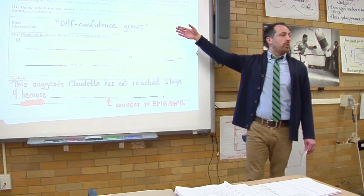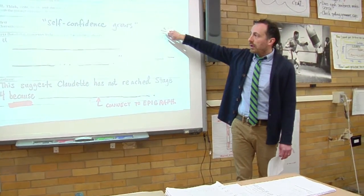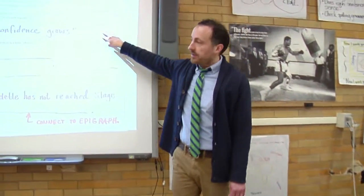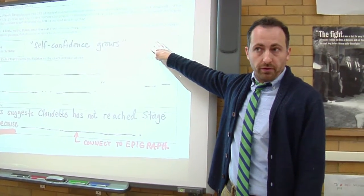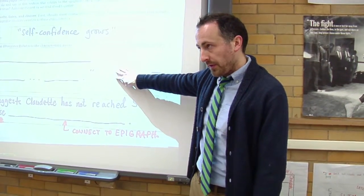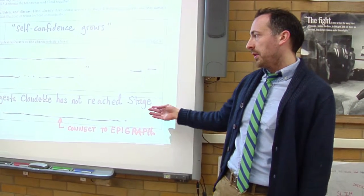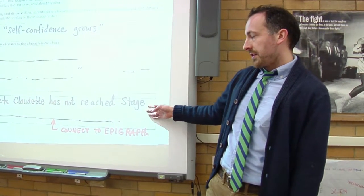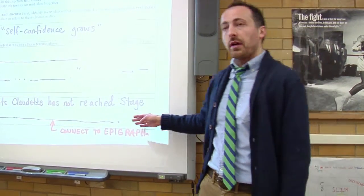So, for example, if you come across a line that you feel shows Claudette lacks self-confidence, you're going to put this line from the epigraph in the first box — the text detail that supports it, along with paragraph number and page number. And then down here, your analysis: 'This suggests Claudette has not yet reached stage four because...' and then your explanation.